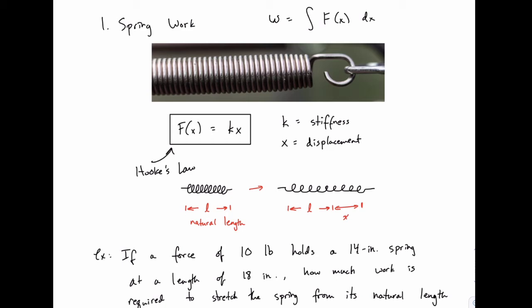The number of coils, the size of the coils, a whole bunch of things. But for us, we're just going to come up with a single number, k, that represents the stiffness. And we'll have a way to calculate that.